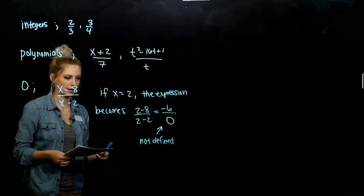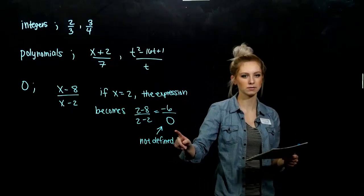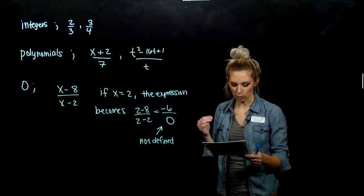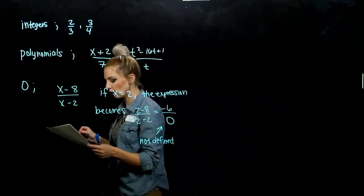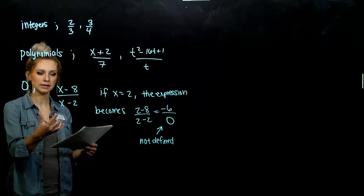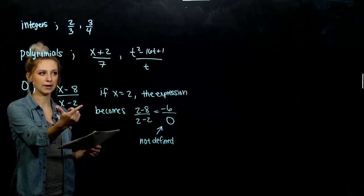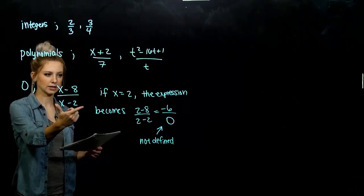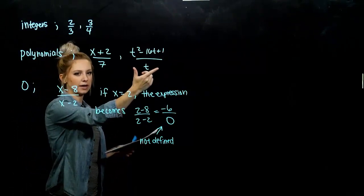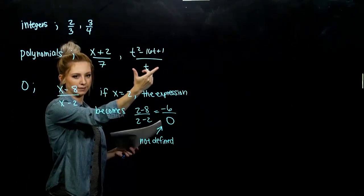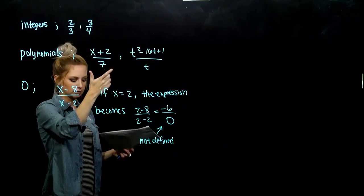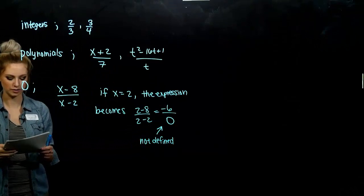In later math classes, you'll study the implications of what this means — picture-wise, we have asymptotes. But in this class, we're not going to worry about that. We do need to figure out all the numbers for which the rational expressions are going to be undefined, because it depends on what polynomial is in the denominator. In this case, I couldn't plug in 2 because it makes the denominator zero. Up here, I can't plug in zero. But if the denominator is always seven, I can plug in whenever I want.